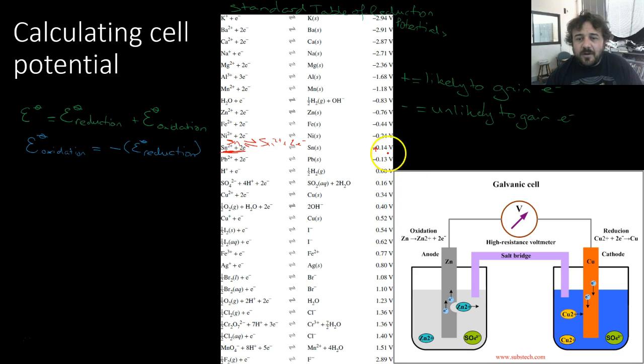Now, if we have a positive number down here, so this is positive, that means it's more likely to gain electrons. If it is a negative number, that means it's unlikely to gain electrons. What that actually means is when you're working out which one's the oxidant and which one is oxidized, which one is reduced, if it is positive, it is likely to reduce. If it is negative, it is likely to oxidize.